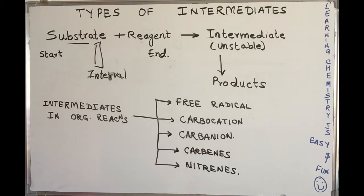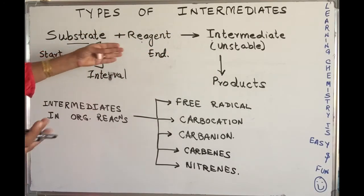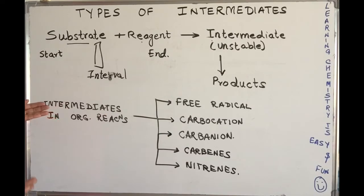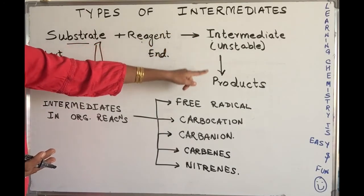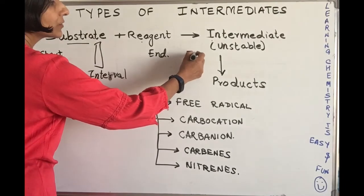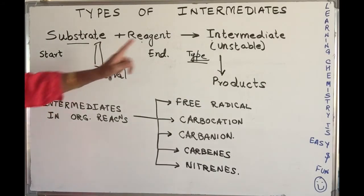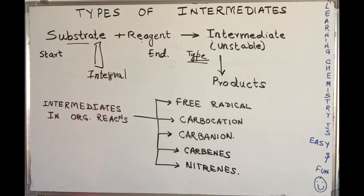The intermediate is highly unstable, so it will either come back to the substrate and reagent form or change to products. It is very important to know the type of intermediate formed because it decides the products. All these examples you will see in the mechanisms already on the channel.